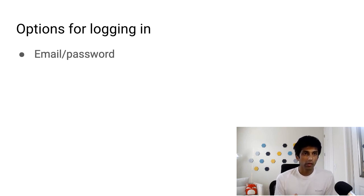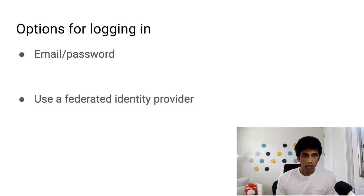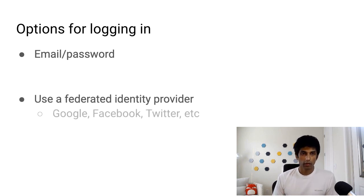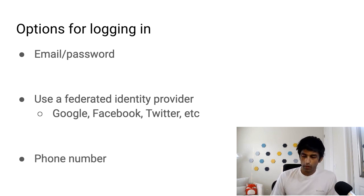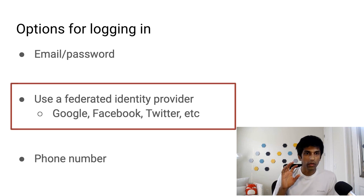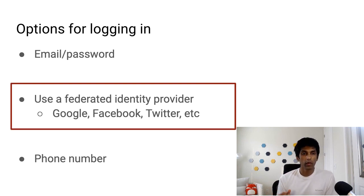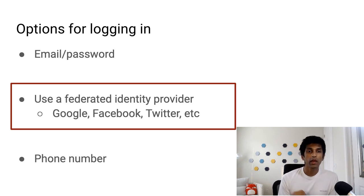One option is to allow the user to sign up by email and password. Second, you can use a federated identity provider — for example, Google, Facebook, Twitter, GitHub, etc. Or third, you can use phone number sign-up. We're going to be using the federated identity provider, and in particular, we're going to allow users to sign into the app using Google.